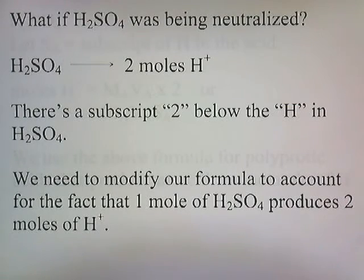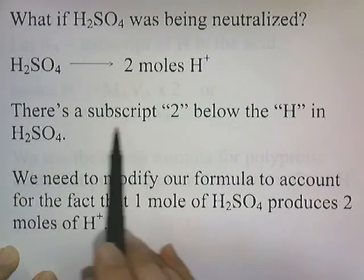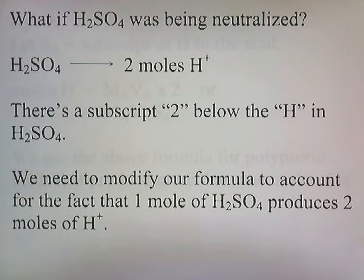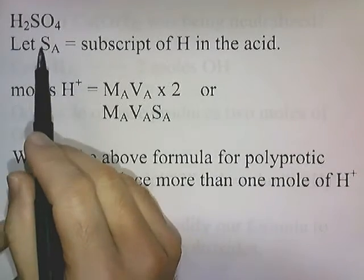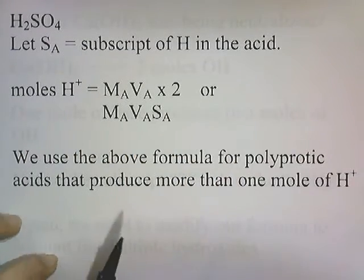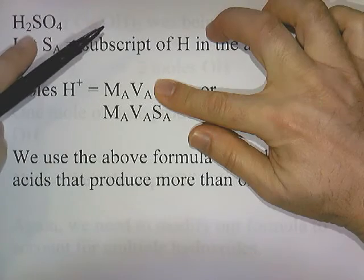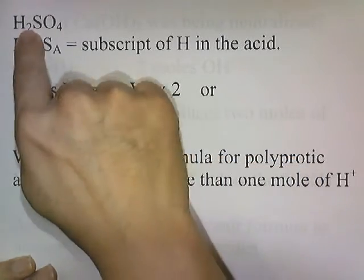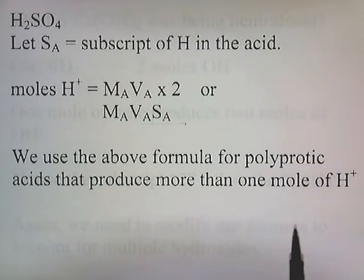What if sulfuric acid was being neutralized? Sulfuric acid can produce 2 moles of H+ when put in water — notice the subscript 2 below the H in H2SO4. We need to modify our formula to account for that. We'll let SA equal the subscript of H in the acid. The original formula was moles of H+ = MA×VA, but since H2SO4 produces 2 H+, we multiply by SA. This formula is used for polyprotic acids that produce more than 1 mole of H+.